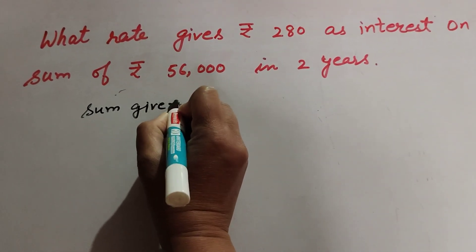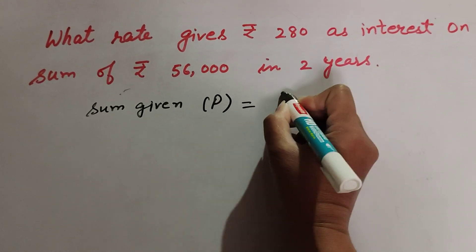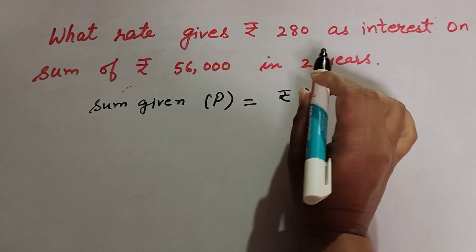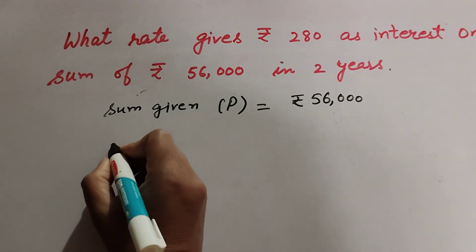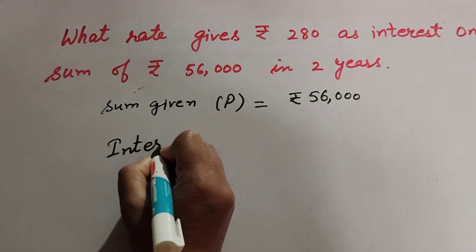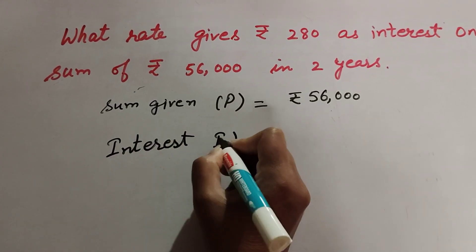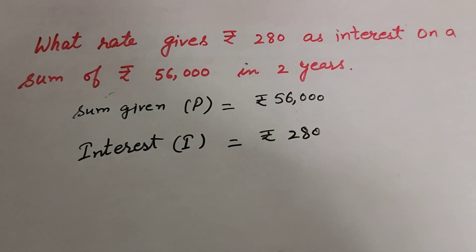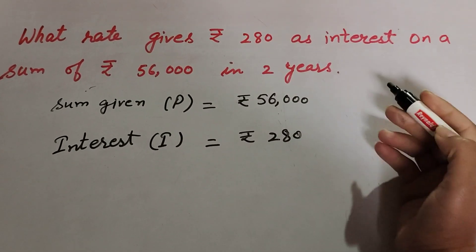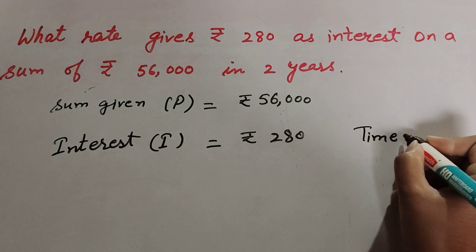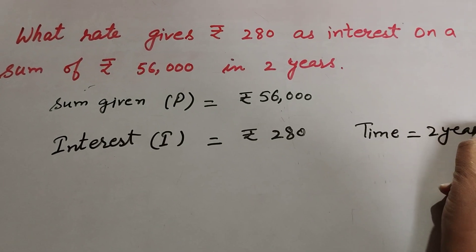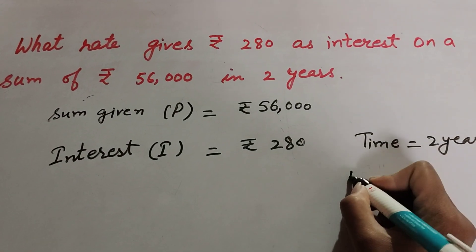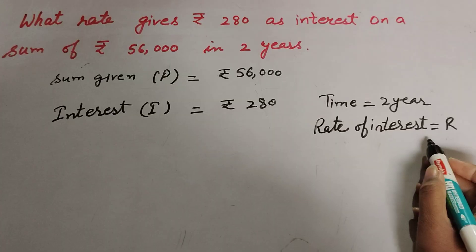The given values are: principal is equal to rupees 56,000, interest is equal to rupees 280, time is given as two years, and we find rate of interest, that is R.